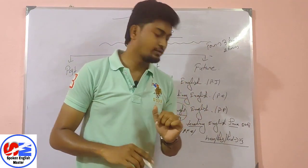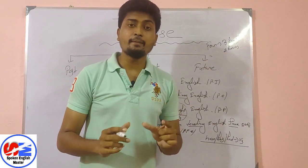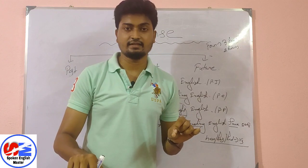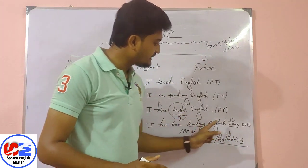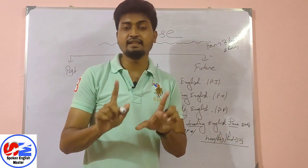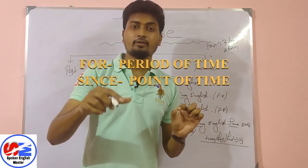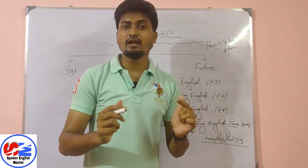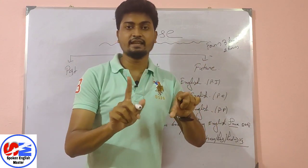Point of time means the particular moment when the work started — for example, 2008, which is when I started teaching. So: 'since' is used with a point of time (the specific moment the action began), and 'for' is used with a period of time (total duration). That is the difference between 'since' and 'for.'